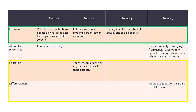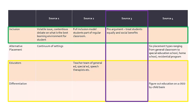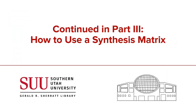Finally, we have one source that only had a single idea. This may mean that we didn't read it very carefully, as most sources discuss multiple ideas. Perhaps we need to give that source a more careful look. To learn more about how to use the synthesis matrix, please watch the next video, How to Use a Synthesis Matrix.